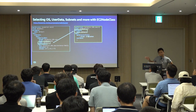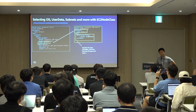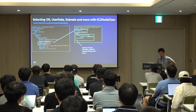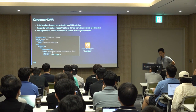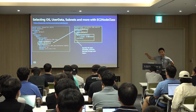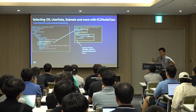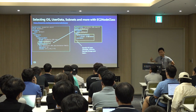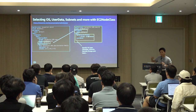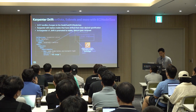The node pool uses one node class. EC2NodeClass is where you define OS type, subnets, user data, security groups, and volume information — similar to AWS Launch Templates. In this example, AL2 means Amazon EKS-optimized Amazon Linux 2 AMI. Using the 'latest' tag means Karpenter will always try to use the latest AMI image matching your Kubernetes API server version.